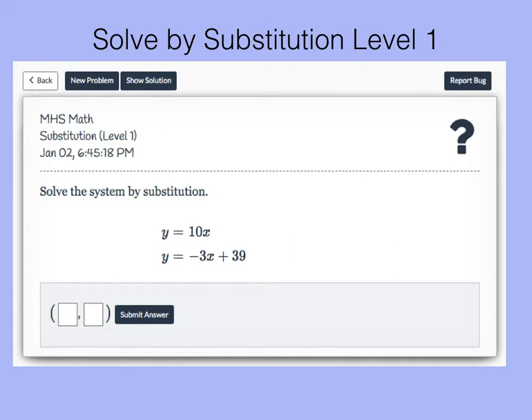We can see that these two functions are written in slope-intercept form. They have different slopes so there will be one solution.